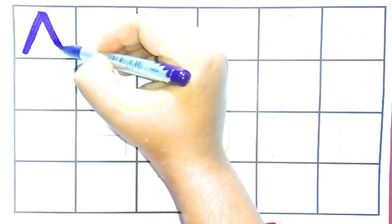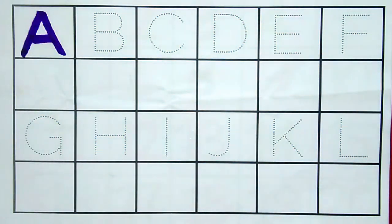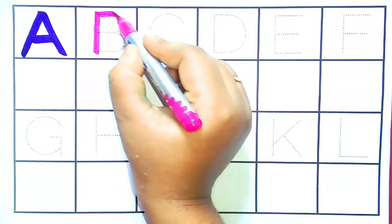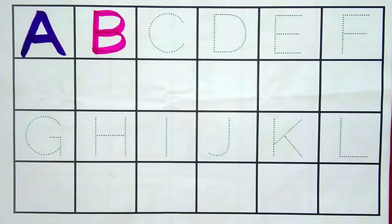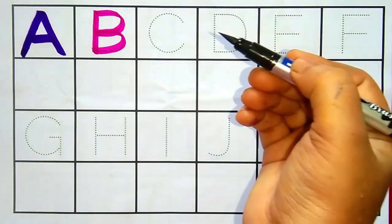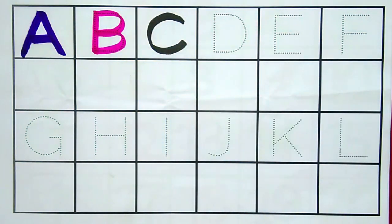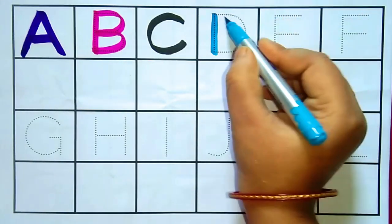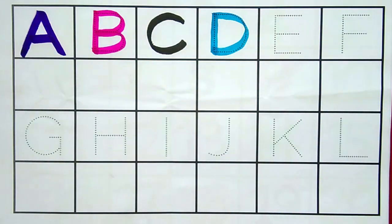A for apple, pink color. B for balloon, black color. C for cat, sky blue color. D for dog, light green color.